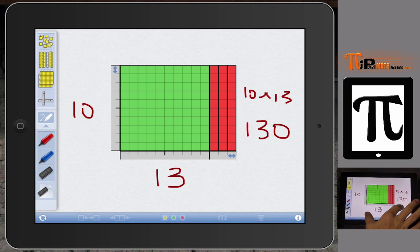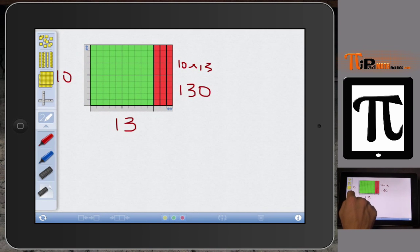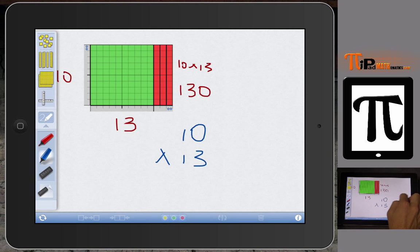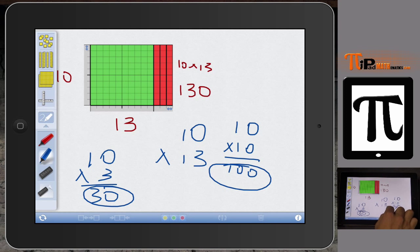And that helps model this concept of partial products to where we have our 10 times 13. Well, we have our 10 by 10. So 10 times 13. 10 times 10, which is 100. And then we have 10 times 3, which is 30. And so you take the 30 plus the 100 and those go together to make the 130.